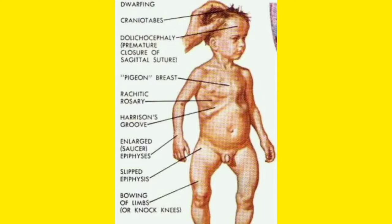Next is dolichocephaly — immature closure of the sagittal sutures, meaning the sutures are not closed properly. Then pigeon breast or pigeon chest. Rachitic rosary is widening of the costochondral junction with prominence. Harrison's groove is produced when the diaphragm pulls the soft ribs, creating Harrison's sulcus.